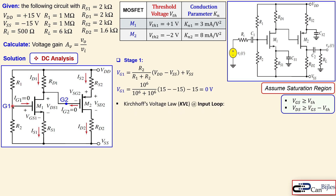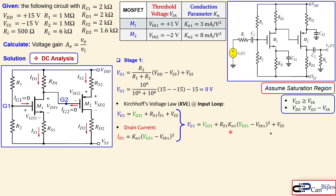Moving on with Kirchhoff's voltage law for the input loop of stage one, we can write: VG1 = VGS1 + voltage across RS1 + the voltage at the lower node. Using the saturation-region drain current formula and noting that IS1 = ID1 (since gate current is zero), we substitute these into the loop equation. The only unknown in the resulting equation is VGS1. Substituting VG1 = 0, RS1 = 2000 Ω, KN1 = 3 mA/V², Vth1 = +1 V, and VSS = −15 V, we simplify to get a quadratic in VGS1.